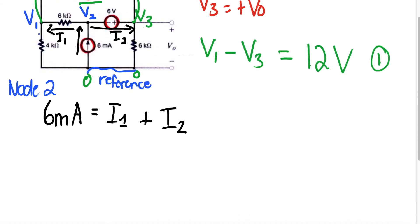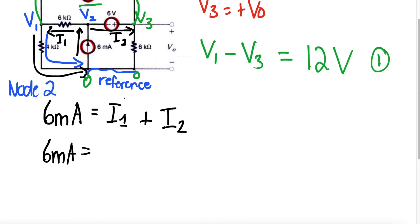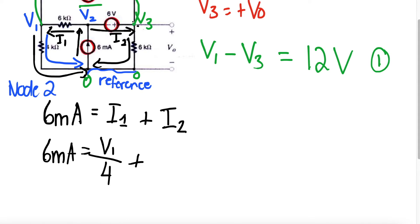Looking at our nodal analysis, I1 continues throughout its loop, so we use the reference node: I1 equals V1 minus zero over 4K, which gives us V1 over 4K. For I2, it loops from node 3 down to the reference node through the 6K resistor, so I2 equals V3 minus zero over 6K, which gives us V3 over 6K.